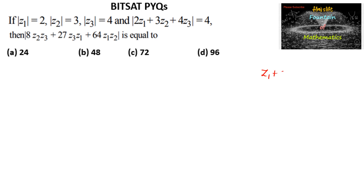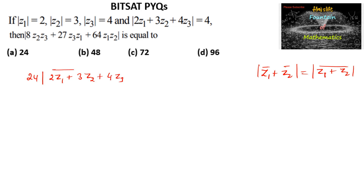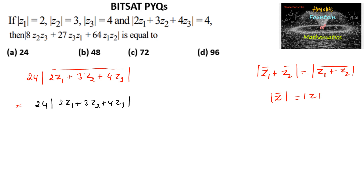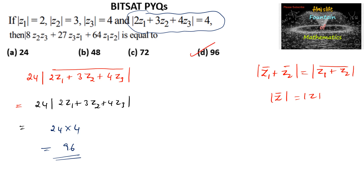Since z̄1 + z̄2 = (z1 + z2)bar, we can write 2z̄1 + 3z̄2 + 4z̄3 as the conjugate of (2z1 + 3z2 + 4z3). Also, since |z̄| = |z|, we have 24 times |2z1 + 3z2 + 4z3|. It is given that |2z1 + 3z2 + 4z3| = 4, so the answer is 24 × 4 = 96. So 96 is the answer, which is option D.